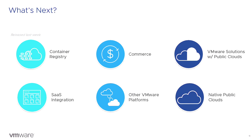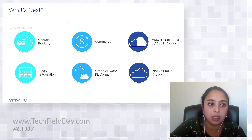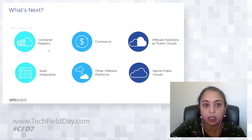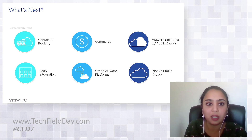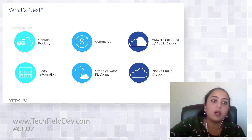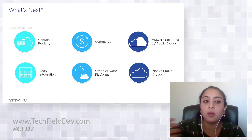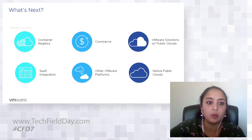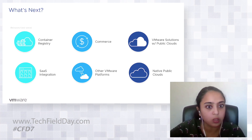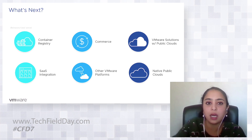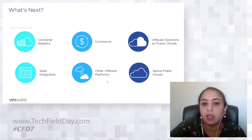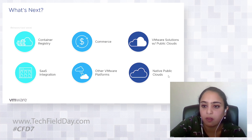As for what's next: one feature was actually released just last week — we've set up our own container registry so that Kubernetes and container images can be deployed in a more seamless way. We're also working on integrating with SaaS partner solutions through API handshakes, so the deployment motion is much easier — once you sign into Marketplace, you should effectively be able to sign into the SaaS partner solution as well. Commerce is upcoming, as well as planned connectivity to other VMware platforms, VMware solutions with public clouds, and eventually to the native public clouds as well.